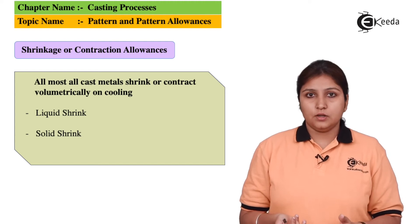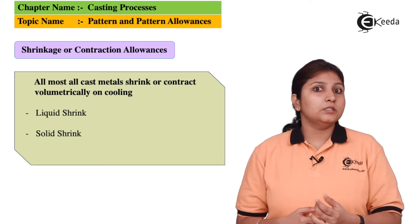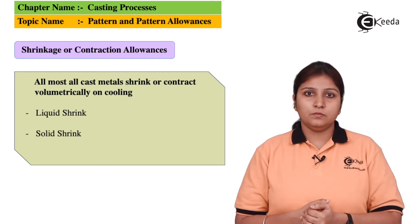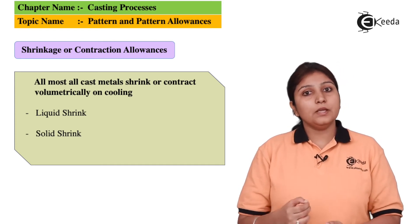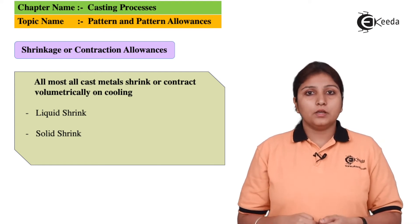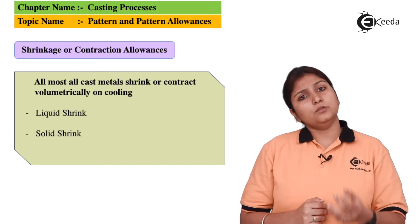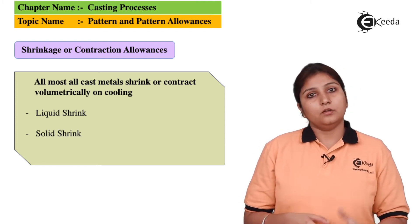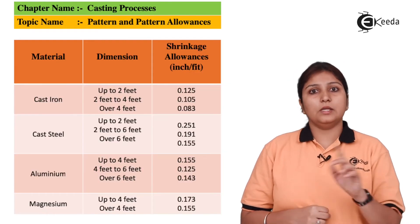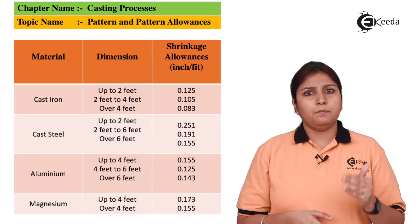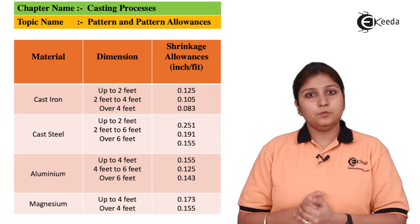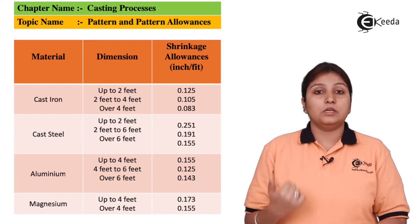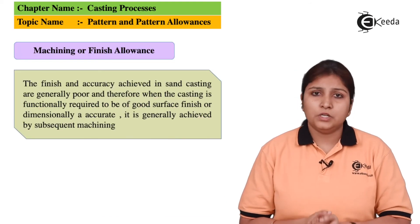The next allowance is shrinkage allowance. Shrinkage occurs in both solid state as well as in liquid stage. As you pour the metal, some metals have a tendency to shrink. There are some metals listed — cast iron, aluminium, etc. — with their shrinkage dimensions given. Each element has its own solidification temperature, so as soon as you pour the metal into the mold it contracts. To avoid that, shrinkage allowance is provided in the pattern itself.